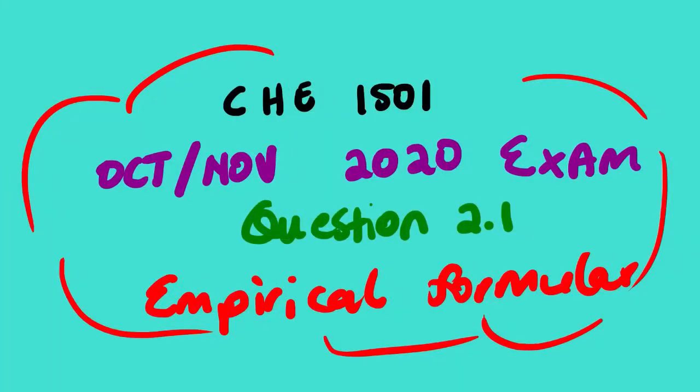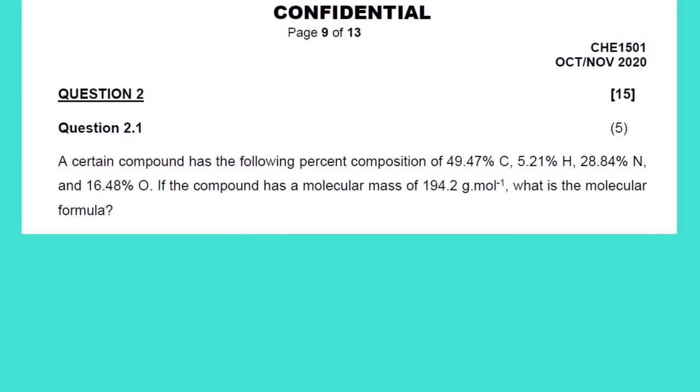Today's lesson will be looking at Chemistry 1501. The topic for today is empirical formula. We'll be looking at a question paper from the October/November 2020 exam, which is Question 2.1. Let us start — this is the actual question paper. As you can see, it is October/November 2020, Question 2, Question 2.1.